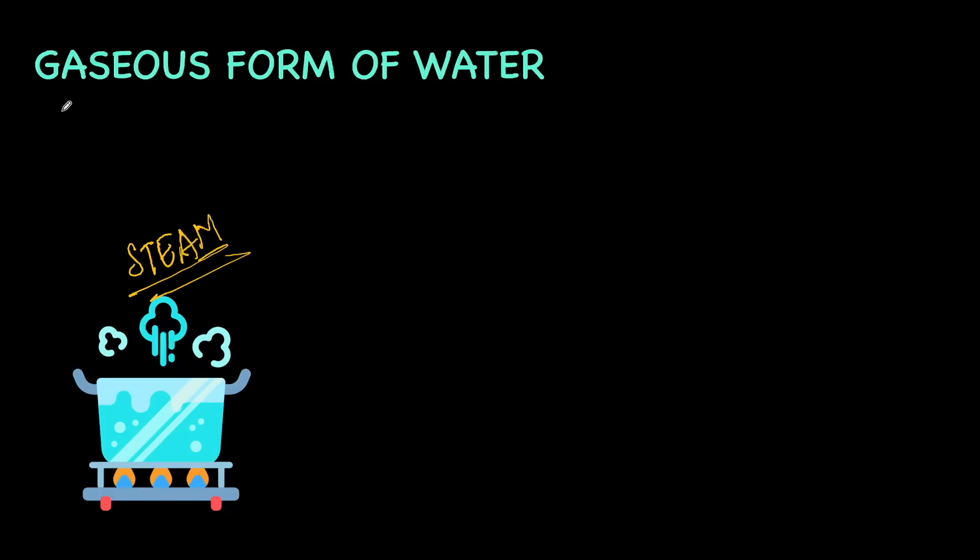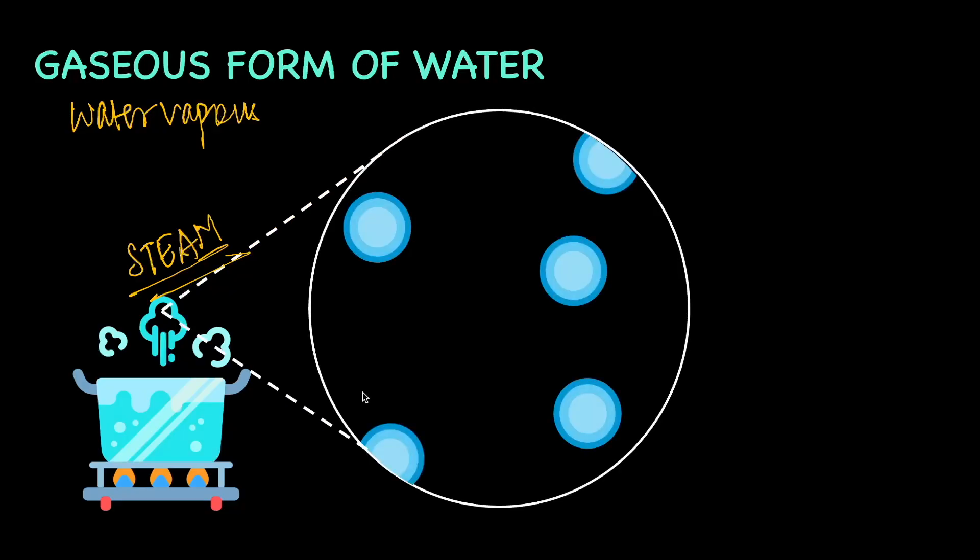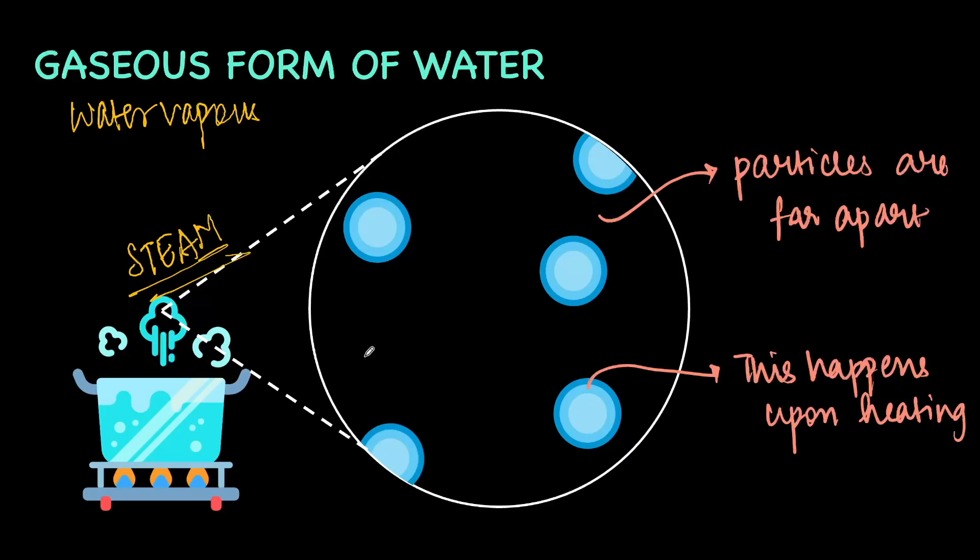But there's another name to this. And this is what we call water vapor. And effectively, in this particular form, we see here that on heating or on increasing the temperature, we notice that the particles start to move far, far away. So as you notice, they are far apart from each other and this happens upon heating. So when the liquid form is subjected to an increase in temperature, it gets converted to the gaseous form, which is water vapor.